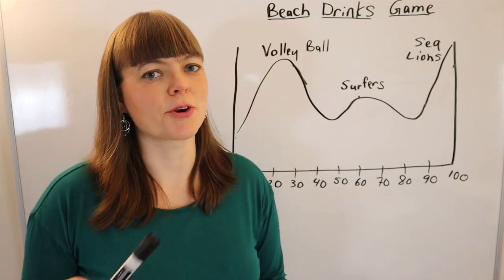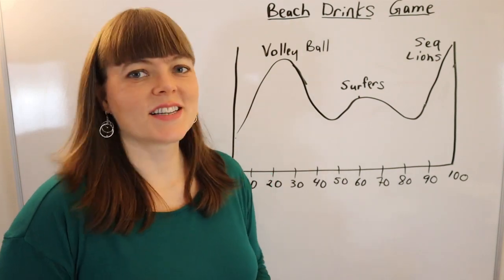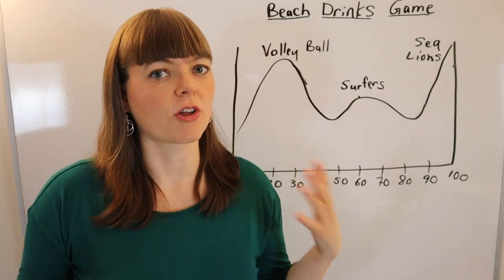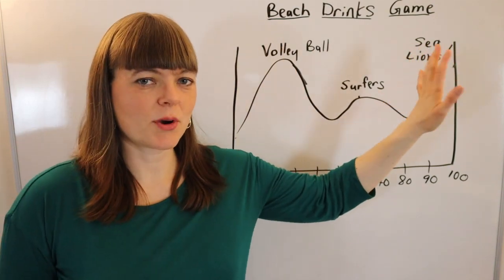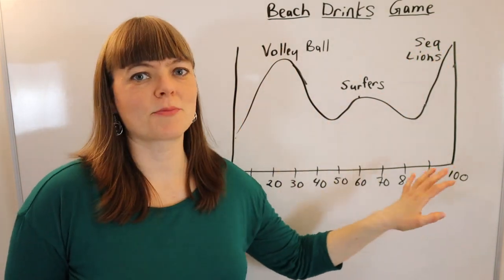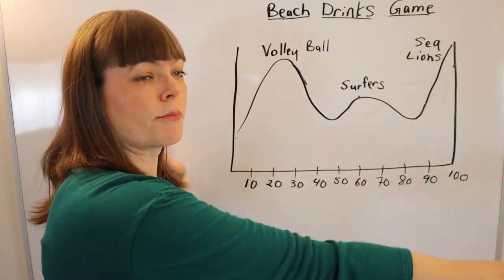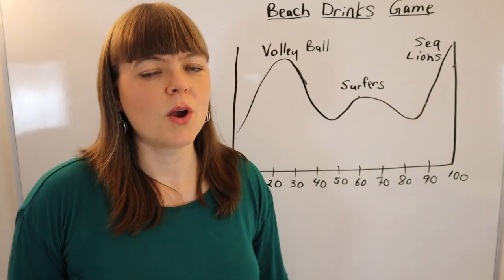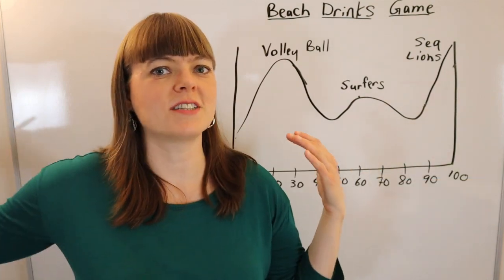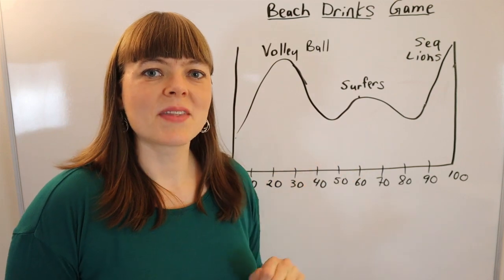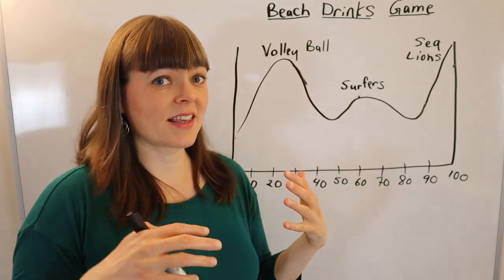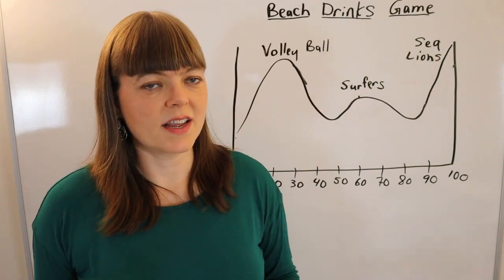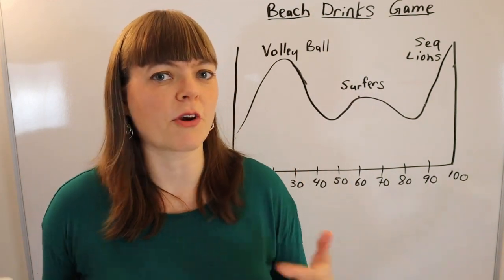I'm going to tell you about a classroom experiment that I like to do to teach my students about monopolistic competition and zero profits in the long run. This is a beach drinks game where they come into the classroom and I have this set up across all of the boards — imagine this diagram spread across four different whiteboards or chalkboards. It takes up the whole front of the room, and this experiment gives students intuitions for a lot of economic concepts that you can refer back to throughout the class.